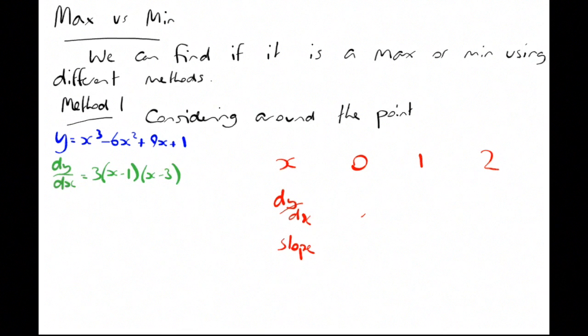So dy by dx, we're just plugging our x values into our gradient function. If we plug in 0, we get 3 times minus 1 times minus 3, we get 9. Plug in 1, that's the solution, so we get nothing. If we plug in 2, we get 3 times 1 times minus 1, so that's minus 3.